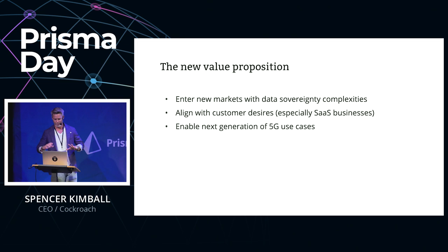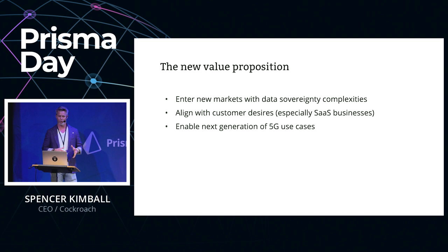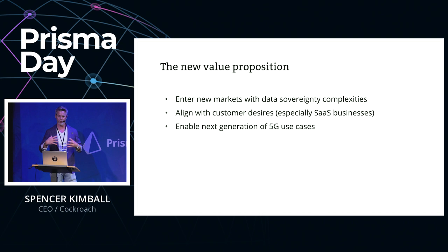So what's the new value proposition? We're allowing companies to enter new markets that may have data sovereignty complexities. An Accenture report last year found that 75% of companies were either planning to abandon plans or exit markets because of data sovereignty complexity. This also lets you fundamentally align with customer desires around latency and legal jurisdiction. If you're a SaaS business, your customers are whole companies with financial information and employee data — an explosion of liability — so legal jurisdiction becomes quite important.